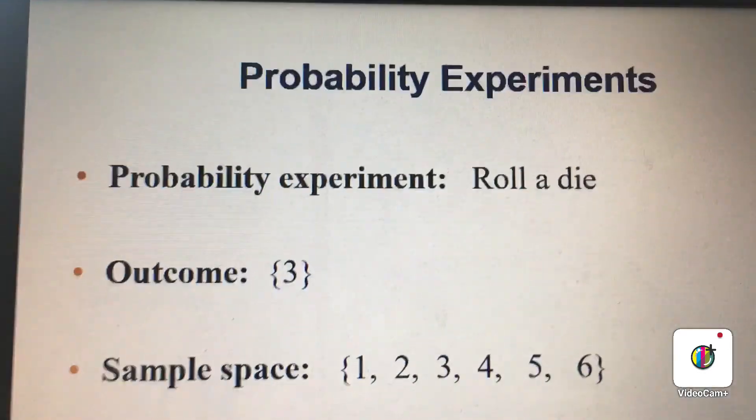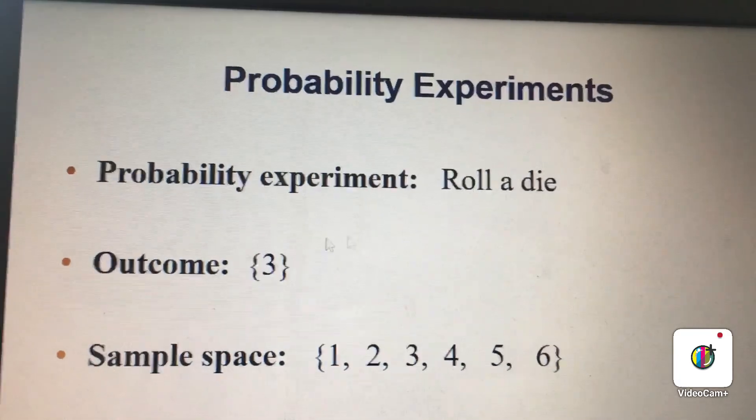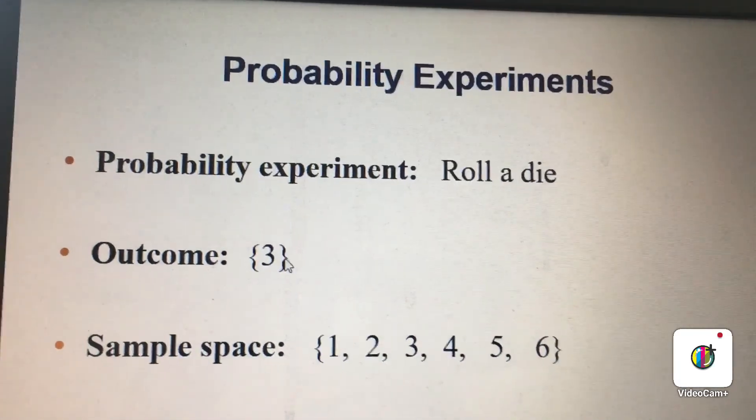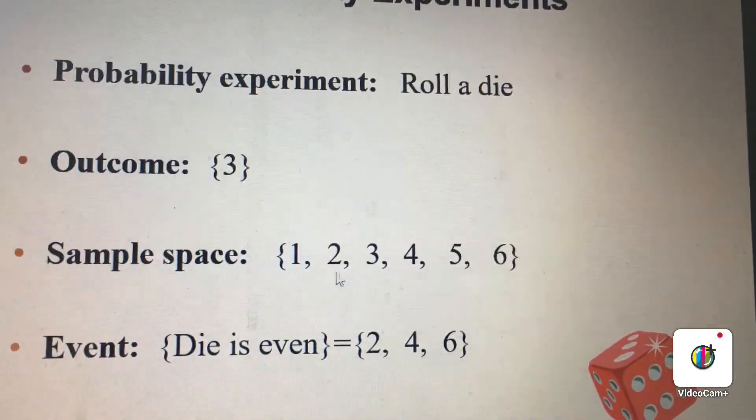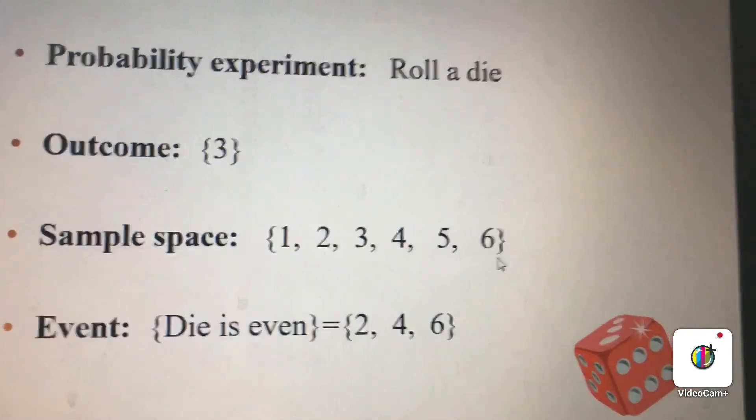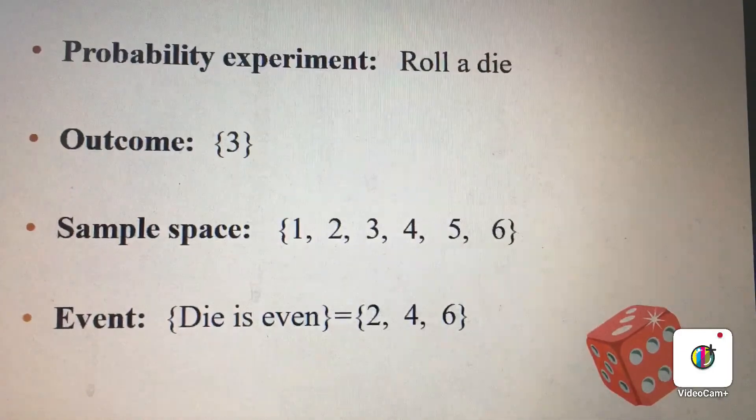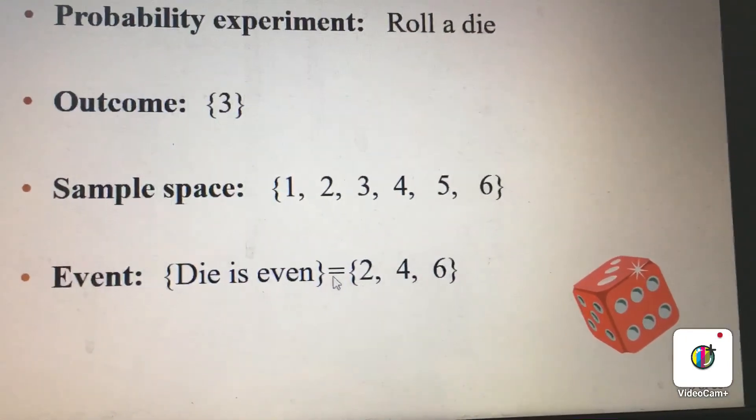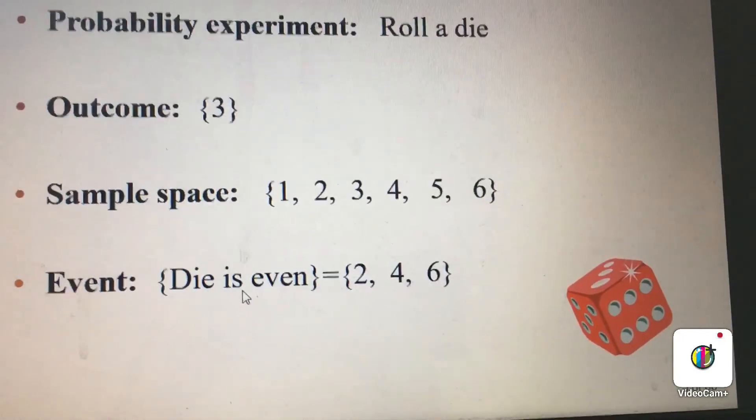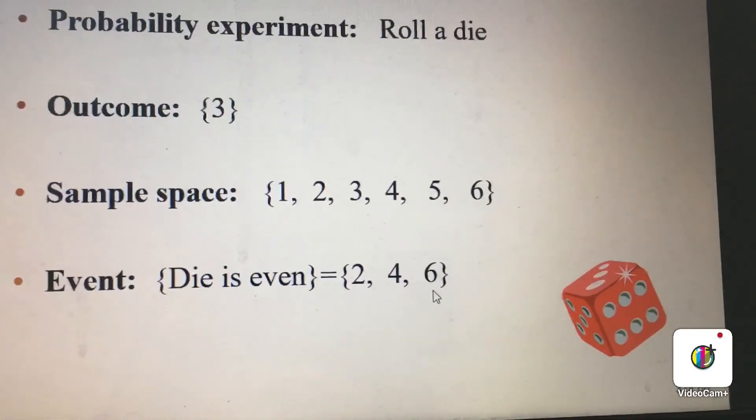Suppose the experiment is roll a dice. The outcome is a three showing up. Now, all the possible outcomes are 1, 2, 3, 4, 5, 6. This is all the possible outcomes for a dice because a dice has six sides. Now, remember the event is a set of outcomes. Look at this. The event even number is 2, 4, 6, because there are three even numbers in a dice.